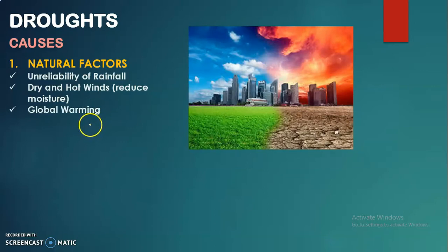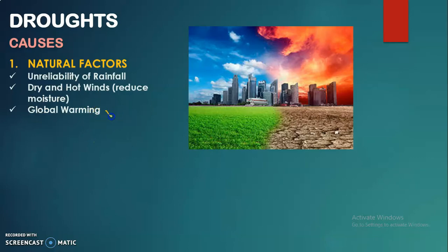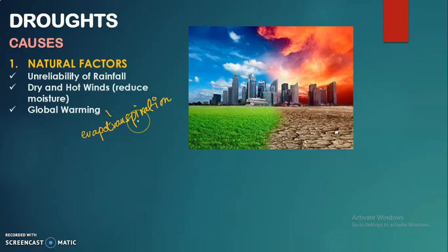The third natural factor is global warming — the increase in temperature in the atmosphere. When we talk about the natural factor, global warming mainly affects evapotranspiration, which is the movement of water in the atmosphere from land, water surfaces, and plants due to evaporation and transpiration. This is expected to lead to an increase in drought in dry areas.